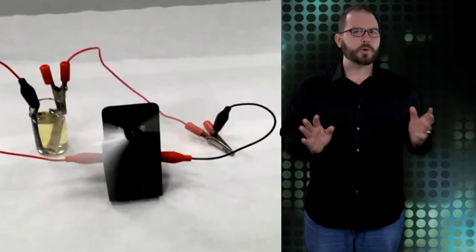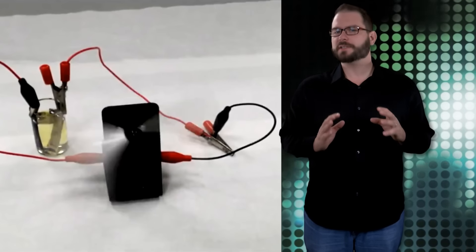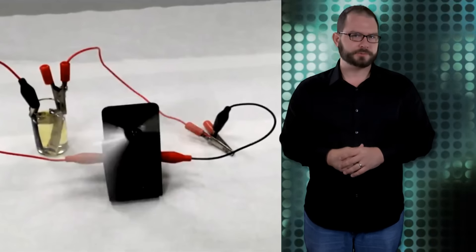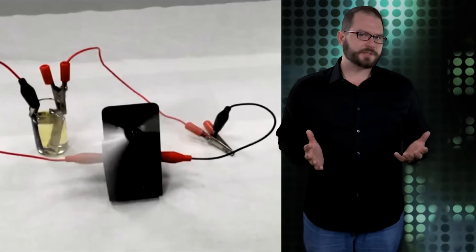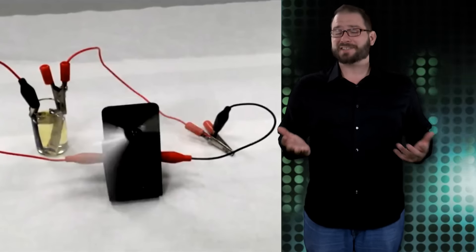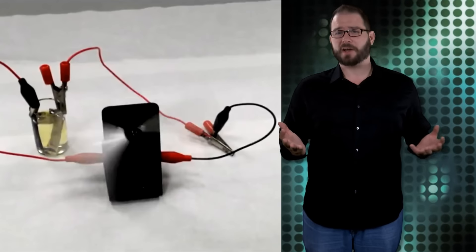They call it the photo battery, and it uses light and titanium nitride for the anode. Metal ion batteries power most of our gadgets, but they take a long time to charge, and sometimes they even overheat and catch fire.